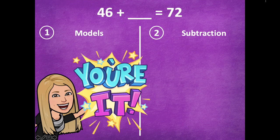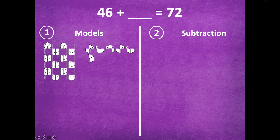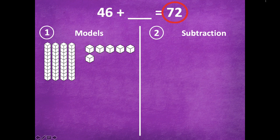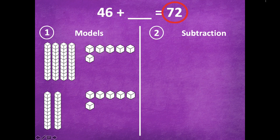All right friends, make sure to pause if you need more time. Otherwise here's how I solved them. So I know one of my known addends is 46, so I'm going to model that first, and then I'm going to count on till I get to 72 to find my missing addend. So I'm at 46, 56, 66, 76, oh again I went too far, so I can't add that 10. So now I'm at 66.